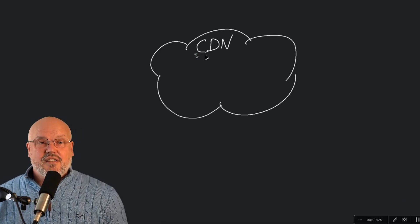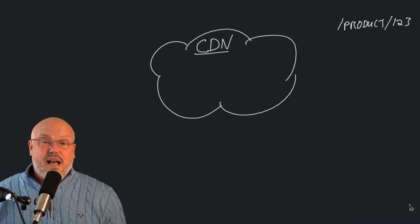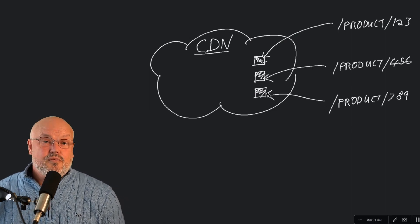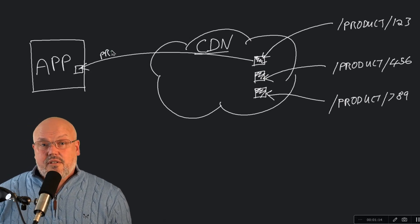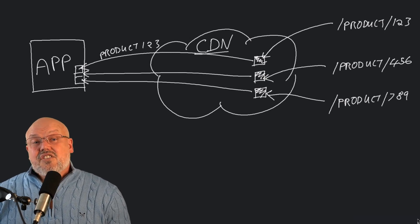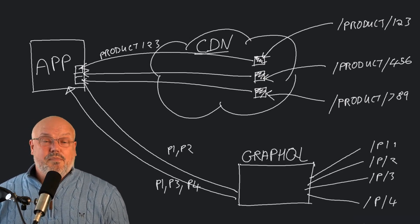Although GraphQL does help to fill that design gap, there are still many considerations before you move to GraphQL. One of those is caching. GraphQL is not very compatible with CDNs, as CDNs have been designed to cache individual resources like a website URL or a microservice URL. The reason GraphQL isn't compatible is that its queries are designed to span multiple resources in a single request.